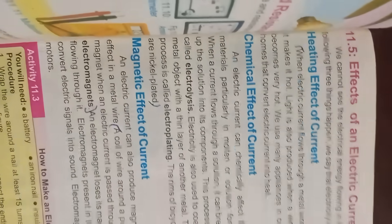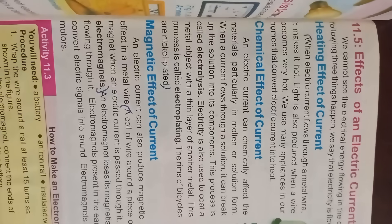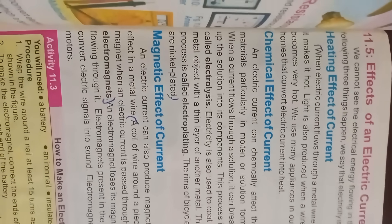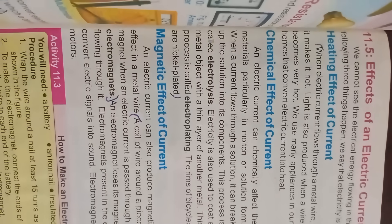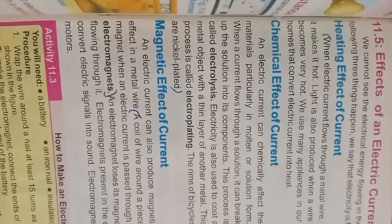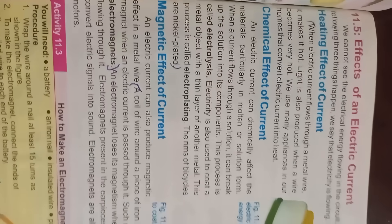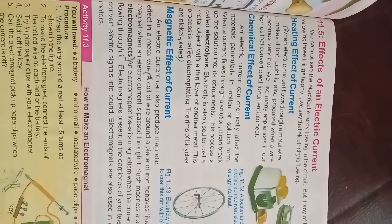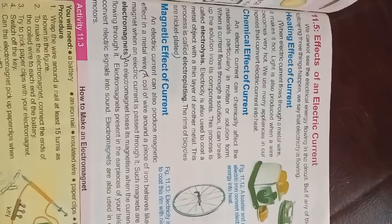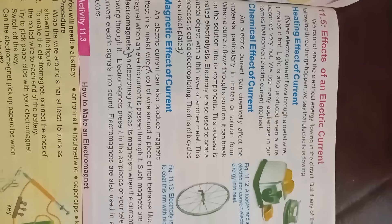Chemical effect of current: an electric current can chemically affect materials, particularly in molten or solution form. When current flows through a solution, it can break the solution into its components — this process is called electrolysis. Electricity is also used to coat a metal object with a thin layer of another metal, called electroplating; for example, bicycle rims are nickel-plated. Magnetic effect: a coil of wire around a piece of iron behaves like a bar magnet when current passes — these are called electromagnets. An electromagnet loses its magnetism when current stops.